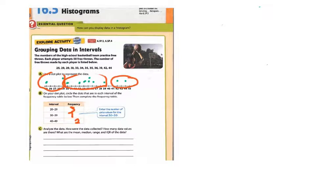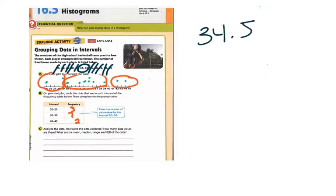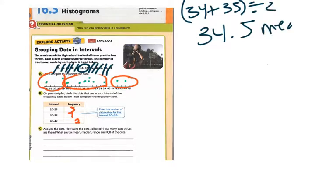Let's start with the median, which means the middle value. Starting with 25 and 44 on the ends, I knock off values from both sides until I get to the middle numbers, which are 34 and 35. So I add 34 plus 35 divided by 2, which gives me 34.5 for my median.